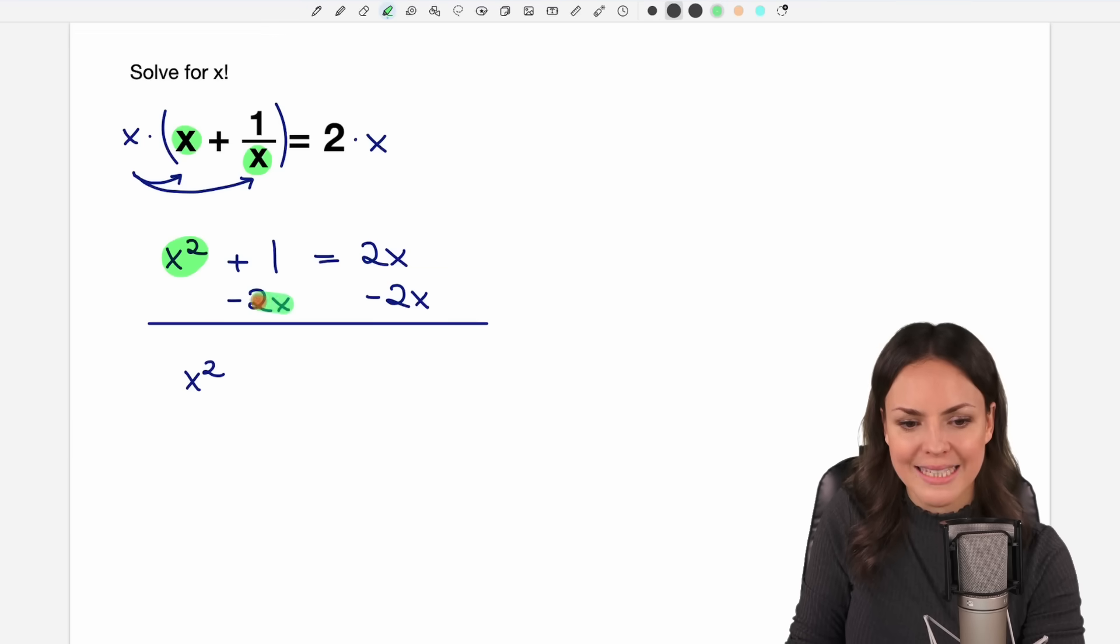Then the parts with the x, this is minus 2x. And then the part with just the numbers, this is the plus 1. And on the other side the 2 cancels out and we have 0. This is perfect for the quadratic formula now.